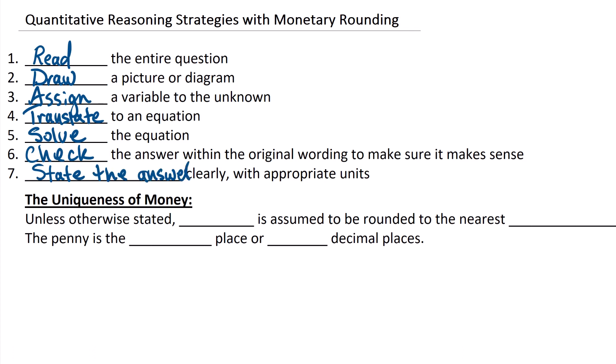So let's talk about the uniqueness of a money scenario or money application. Whenever you're talking about money — specifically dollars — it's assumed to be rounded to the nearest penny unless otherwise stated. The penny, or pennies, is the hundredths place, so we'll say two decimal places. Keep that in mind when we're asking for rounding to the nearest penny.